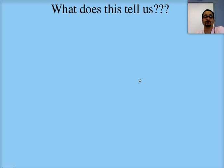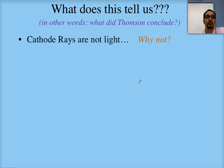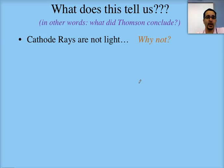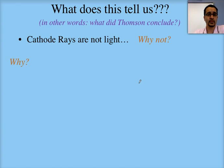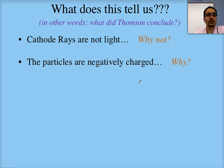So what does this tell us? What did Thomson conclude? For each observation, I want you to write down why you think Thomson reached his conclusion. The first conclusion is that cathode rays are not light — think about why he was able to conclude that. He concluded that cathode rays were in fact particles as opposed to light. He also concluded that the particles are negatively charged — again, please write down your reasoning.